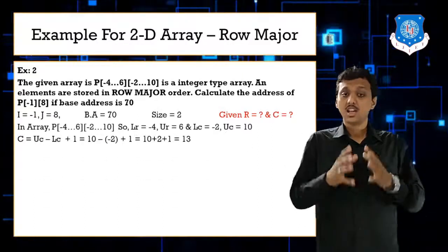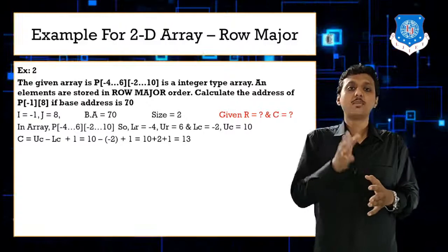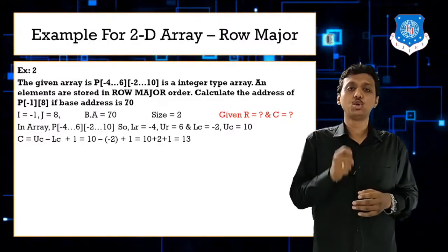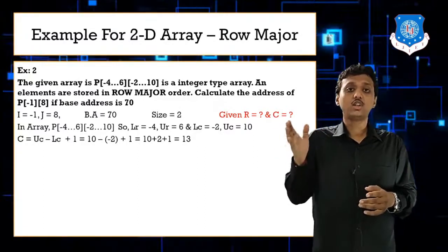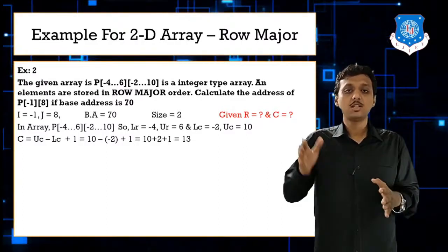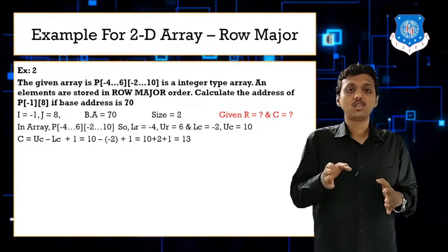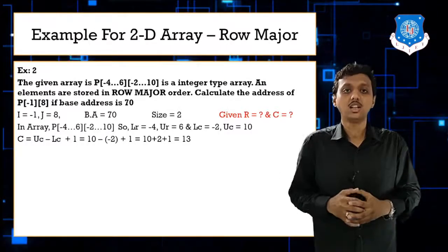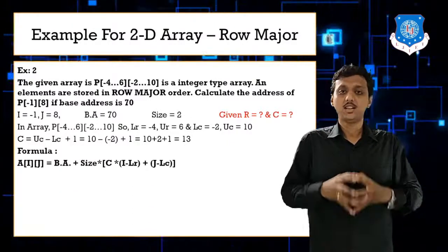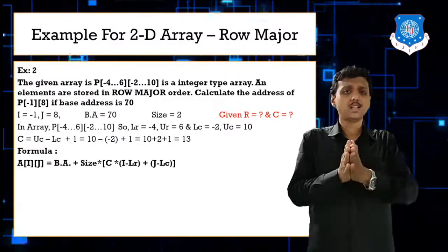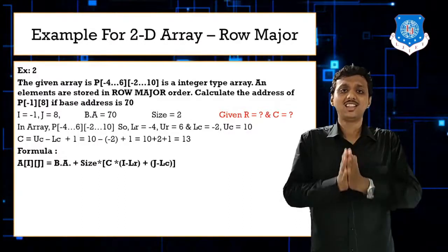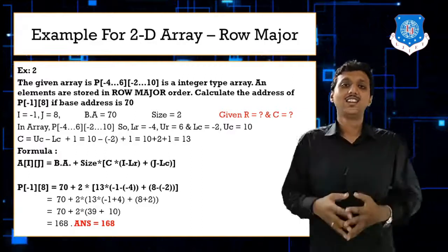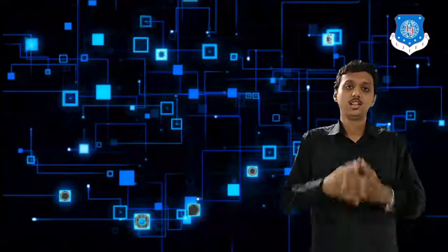Calculate C: C = UC - LC + 1. The column range is -2 to 10, so UC = 10 and LC = -2. C = 10 - (-2) + 1 = 13. LR = -4. Now apply the formula: A[i][j] = base address + size × (C × (i - LR) + (j - LC)). Substituting all values, the answer is 168.